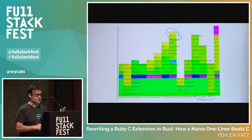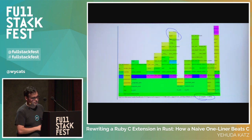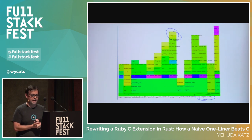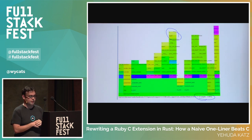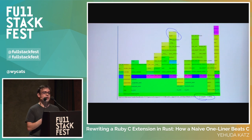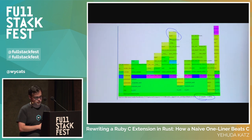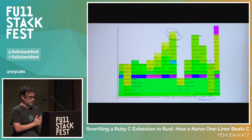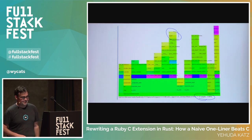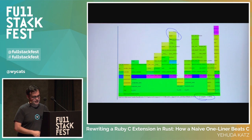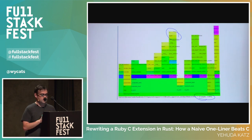One day Sam Saffron was looking at a flame graph and noticed that the blank? method was taking up a lot of time — about 4% of the total time in the whole program. 4% is a big chunk; maybe your request takes 100 milliseconds, that could be 4 milliseconds. So he said let me try to make it faster.